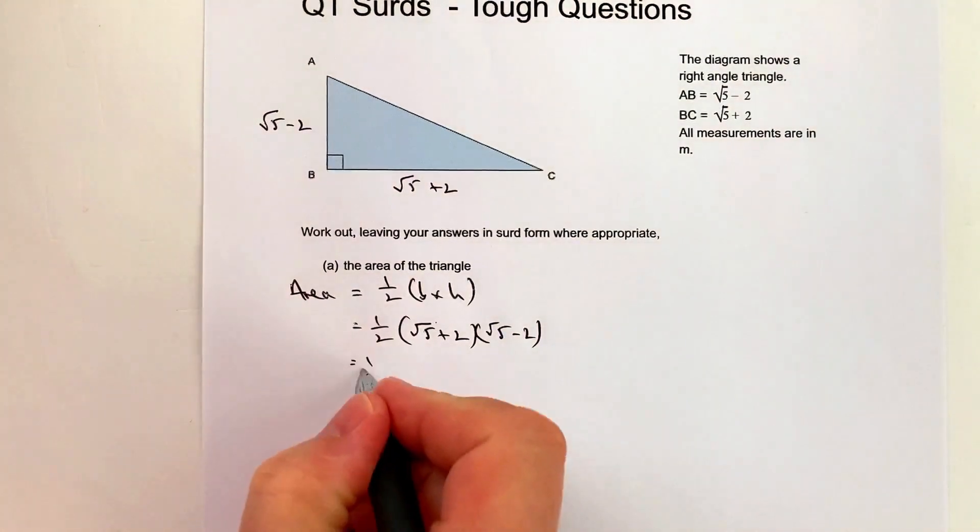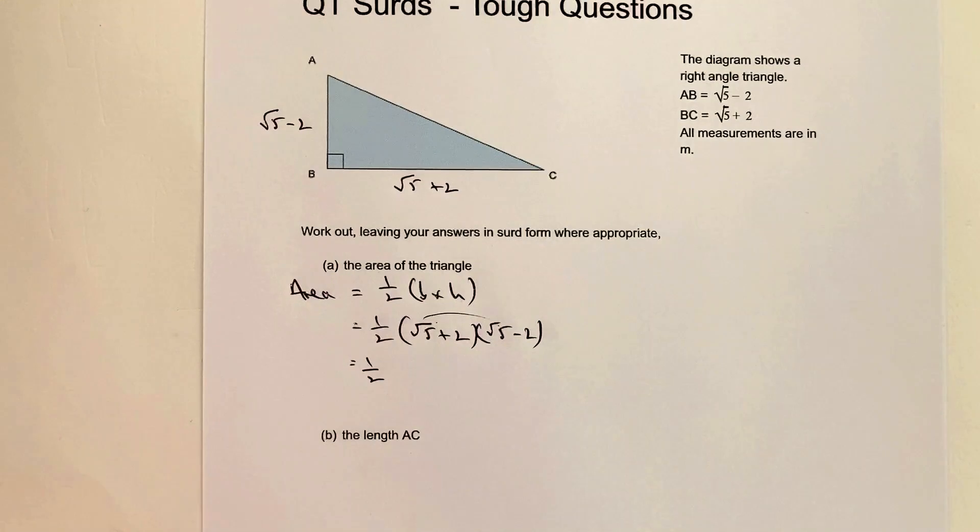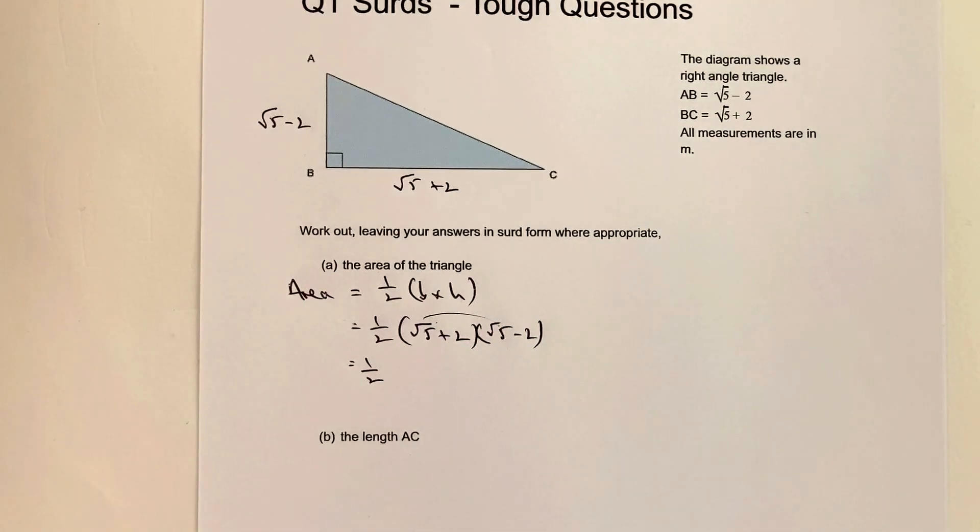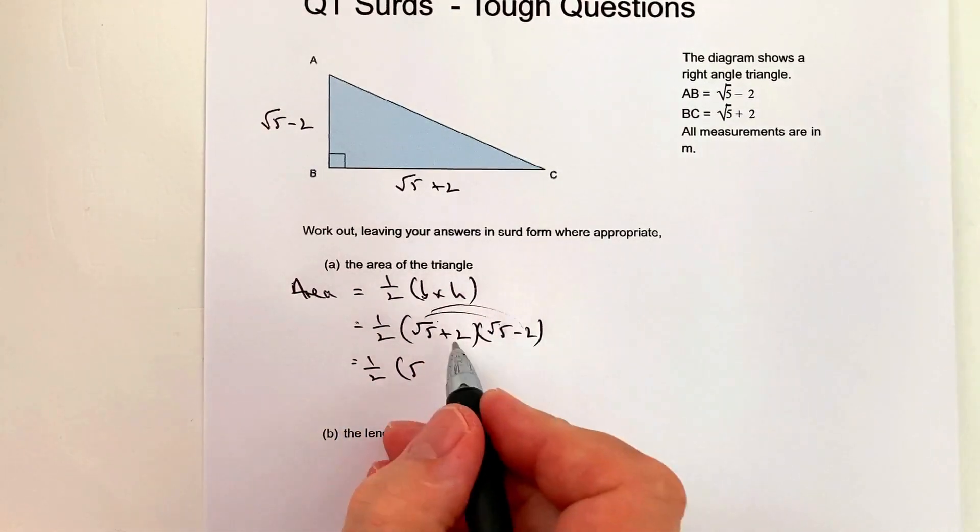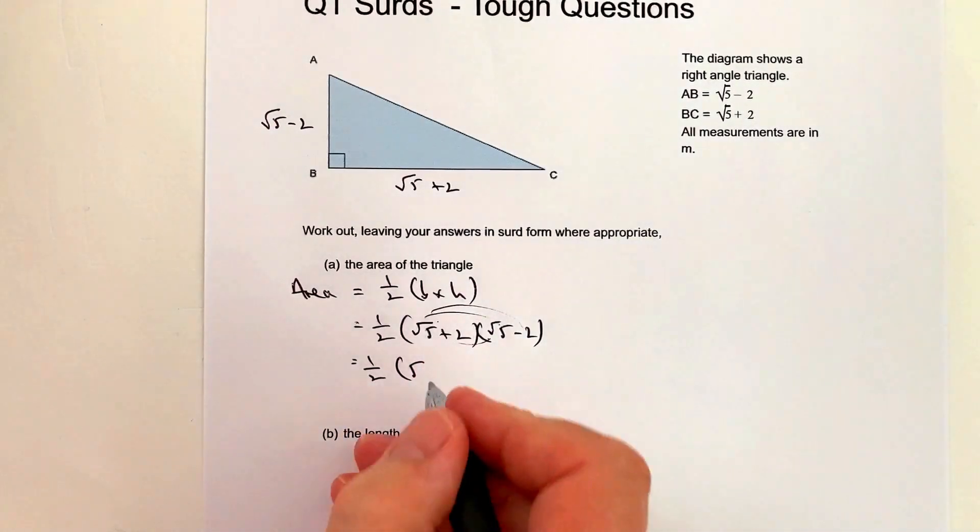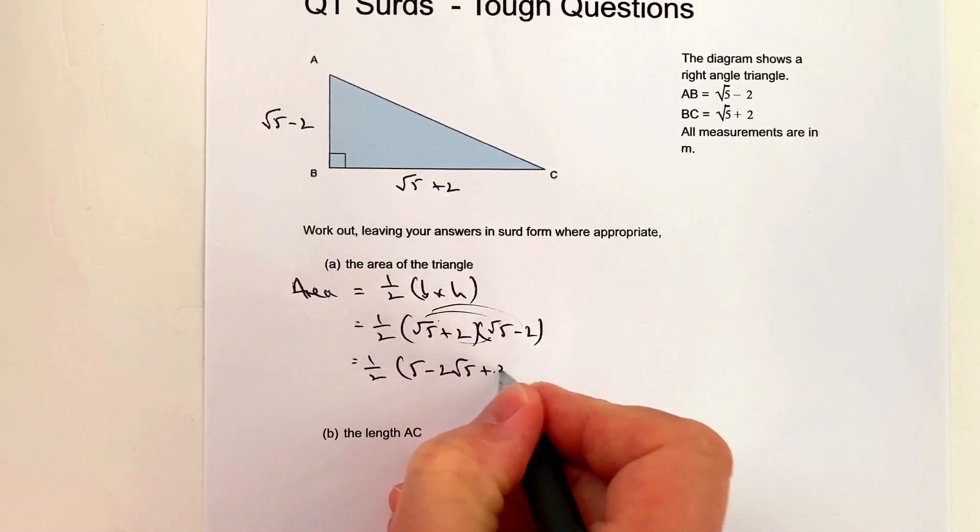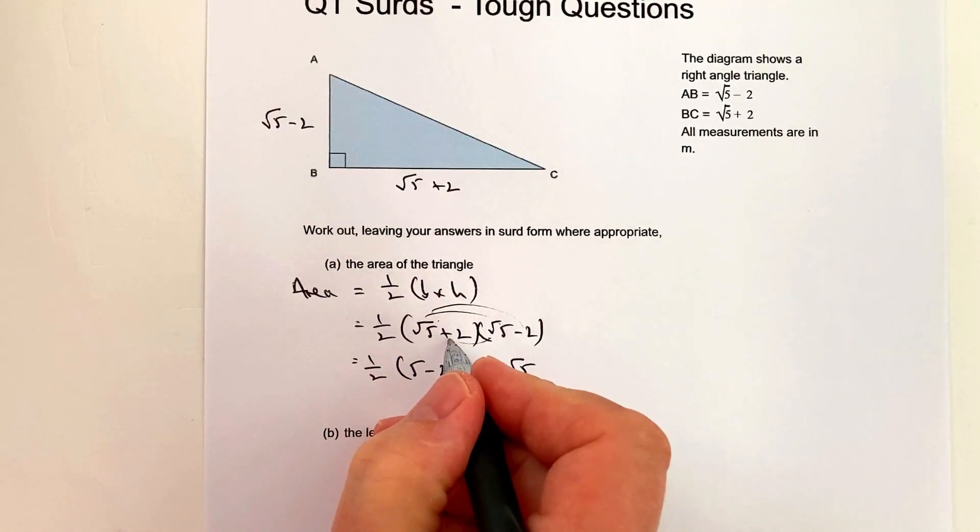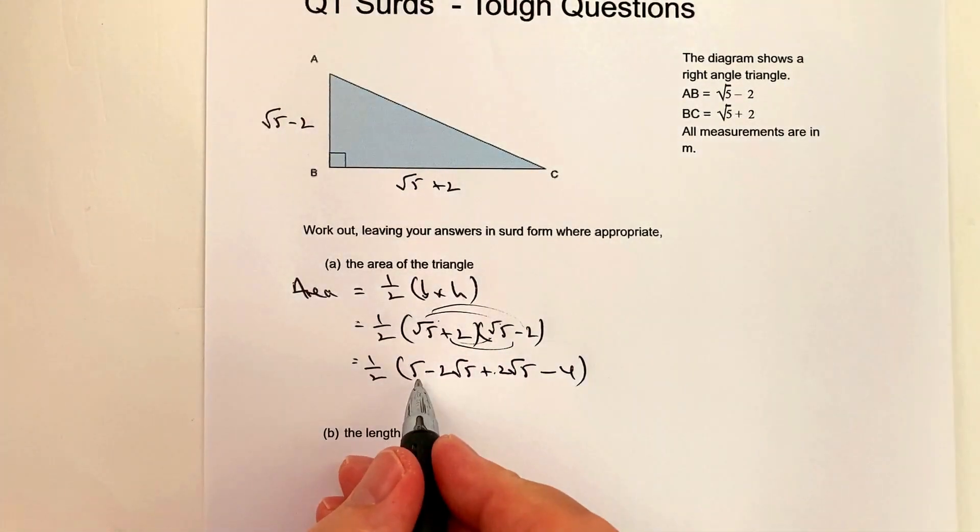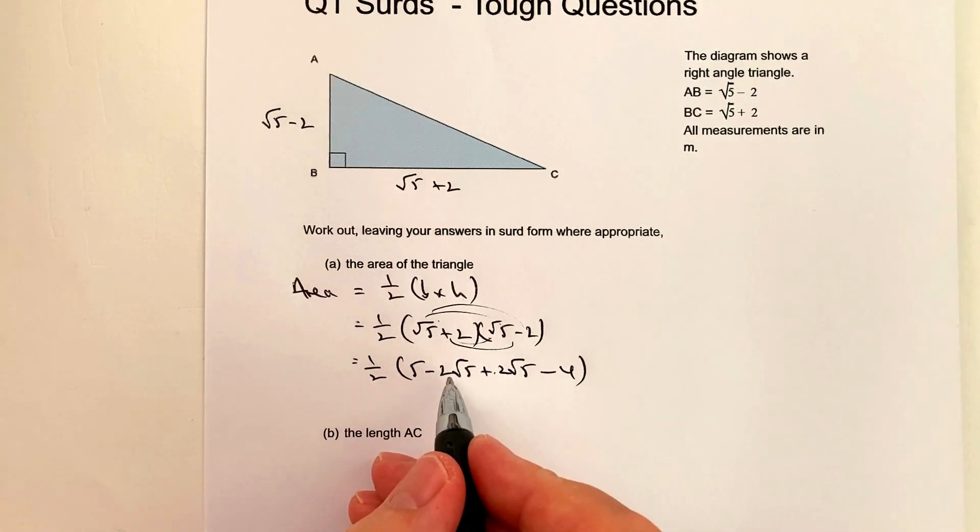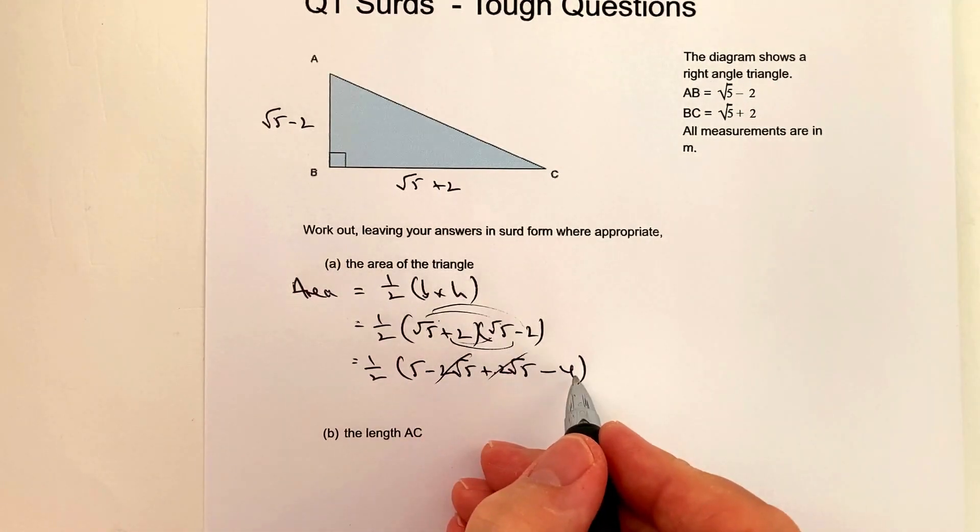I'll leave the half for now. √5 times √5 is √25, which equals 5. Then I've got -2√5 + 2√5. Those two cancel each other out, but I'll write them anyway. Finally, 2 times -2 equals -4. So that's 5 - 2√5 + 2√5 - 4. The middle terms cancel, leaving 5 - 4.